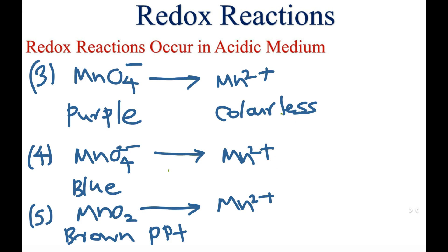The third reaction in acidic medium is permanganate ion becoming Mn²⁺. Permanganate structure is MnO₄⁻ and its color is purple. Purple becomes colorless because MnO₄⁻ becomes Mn²⁺ in acidic medium.